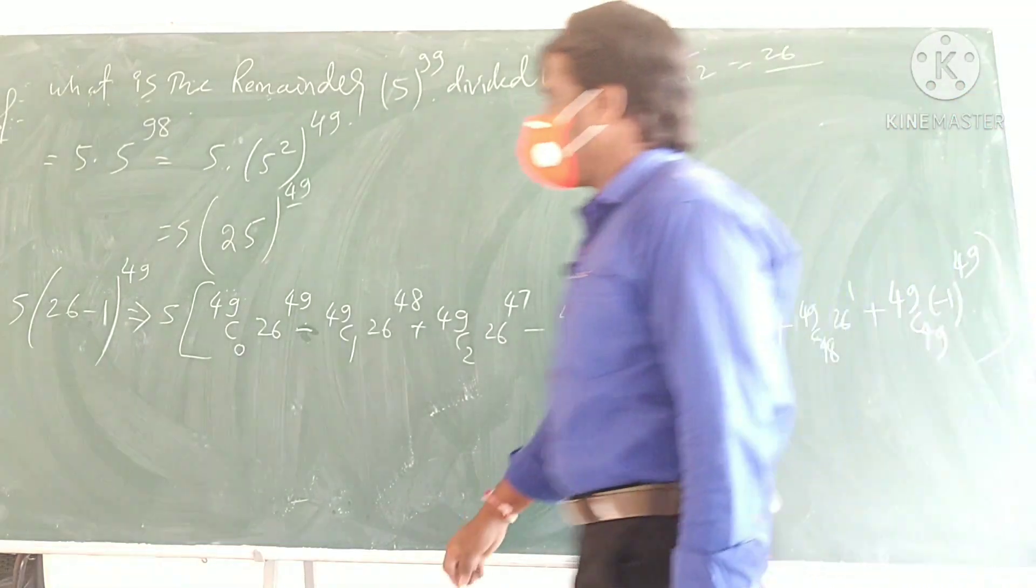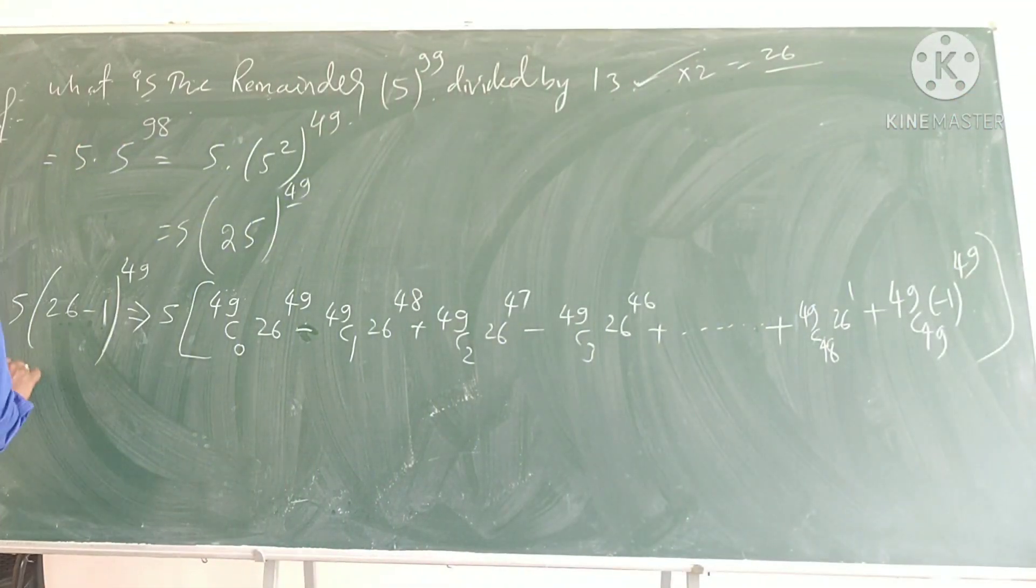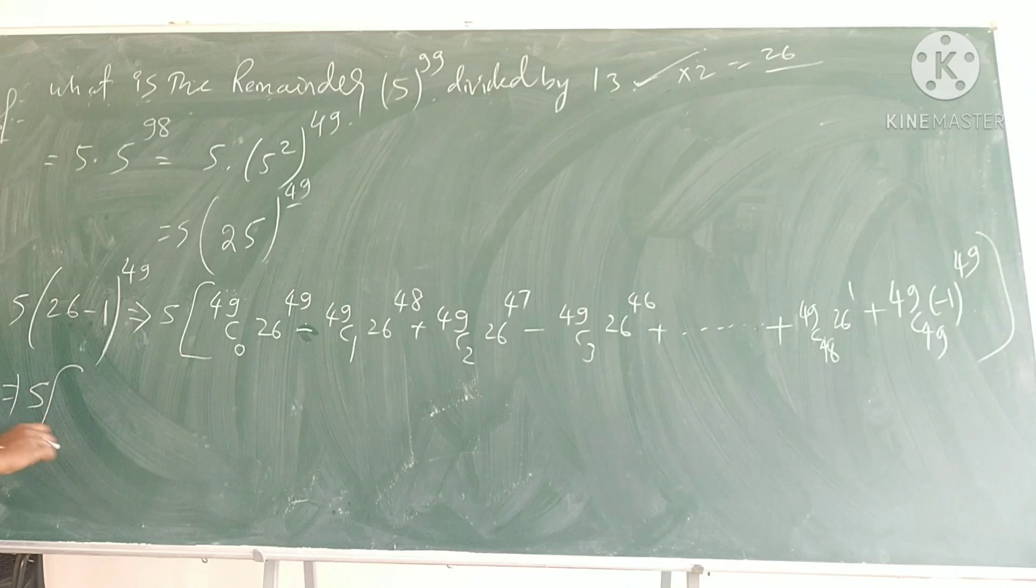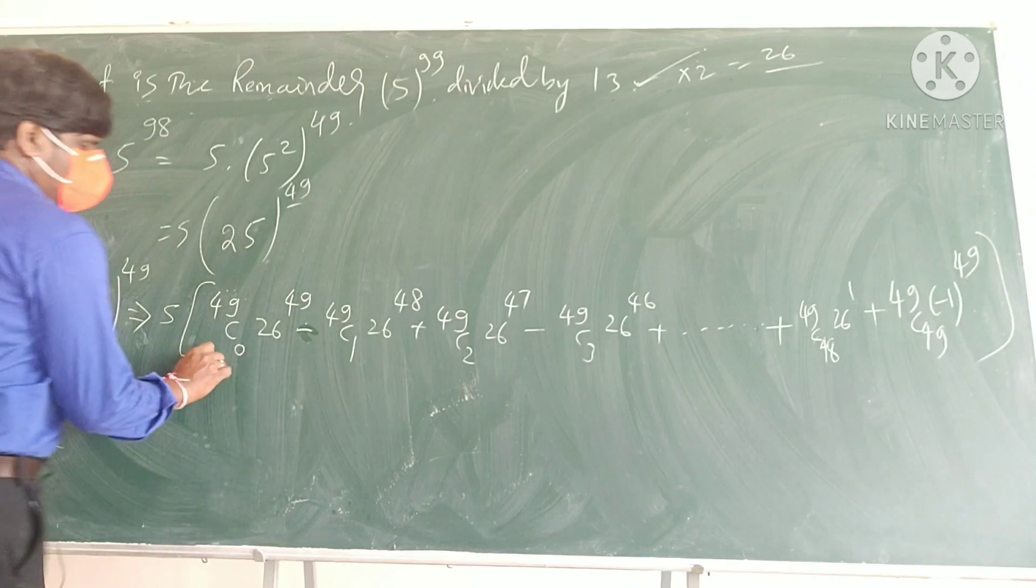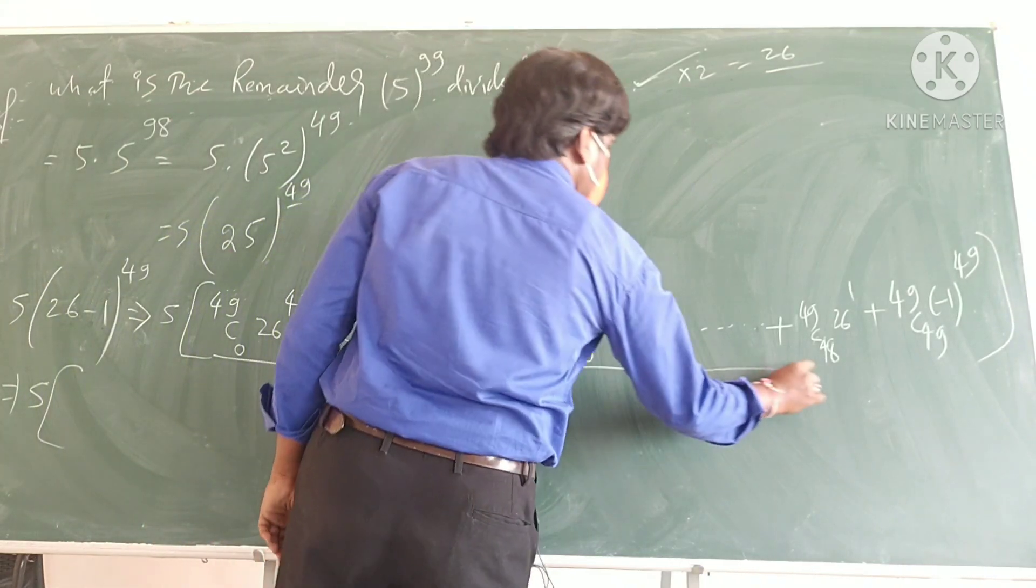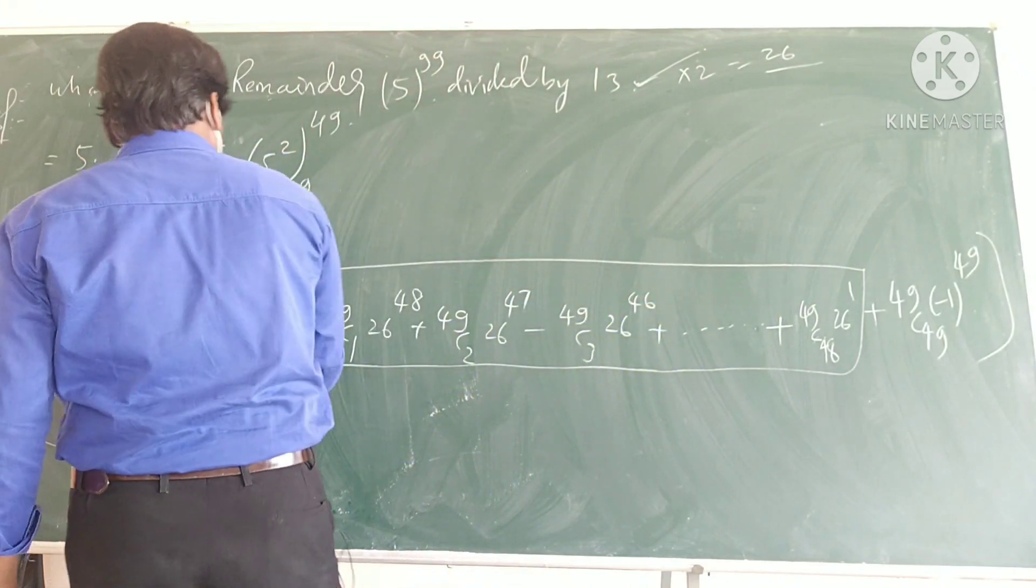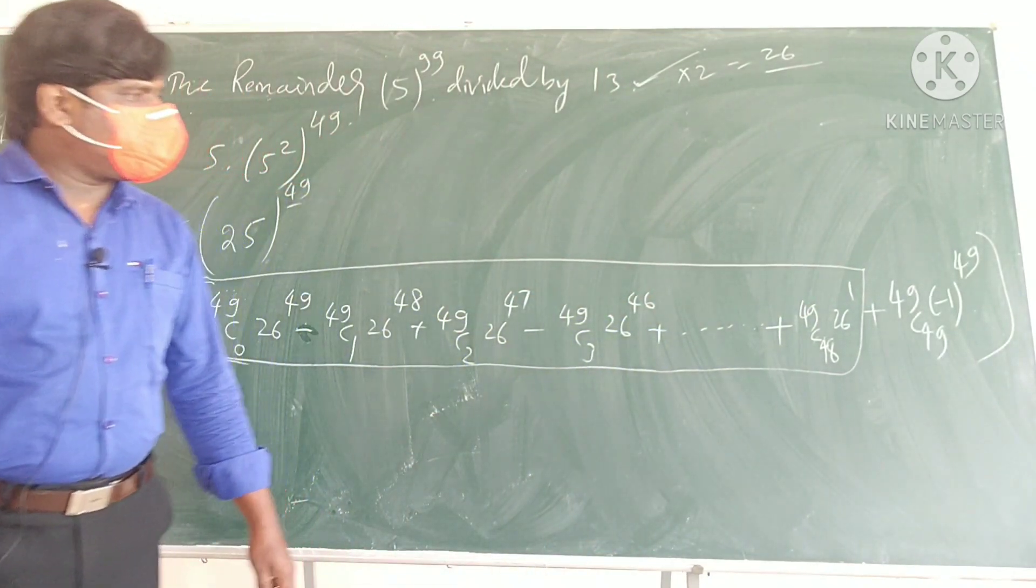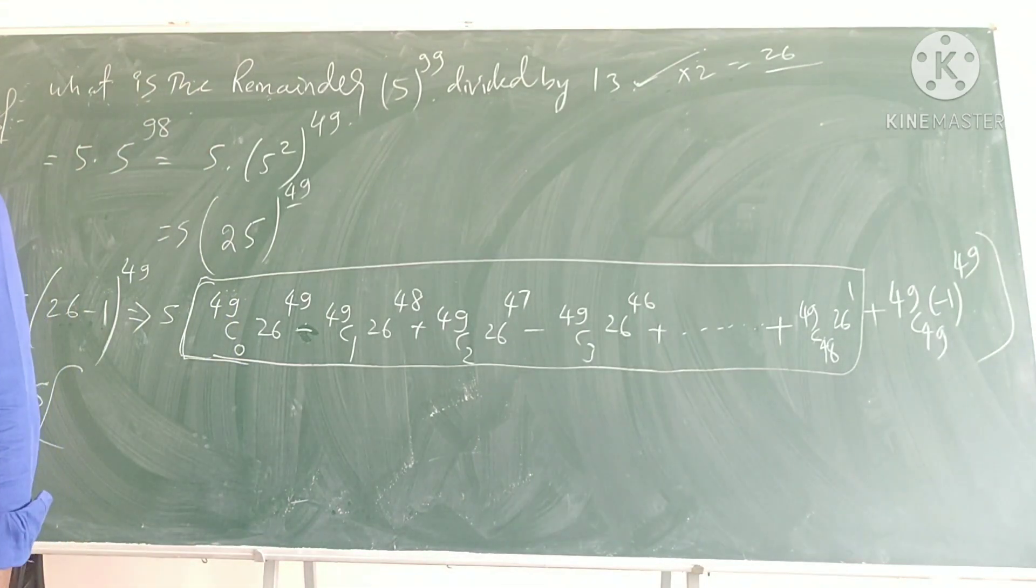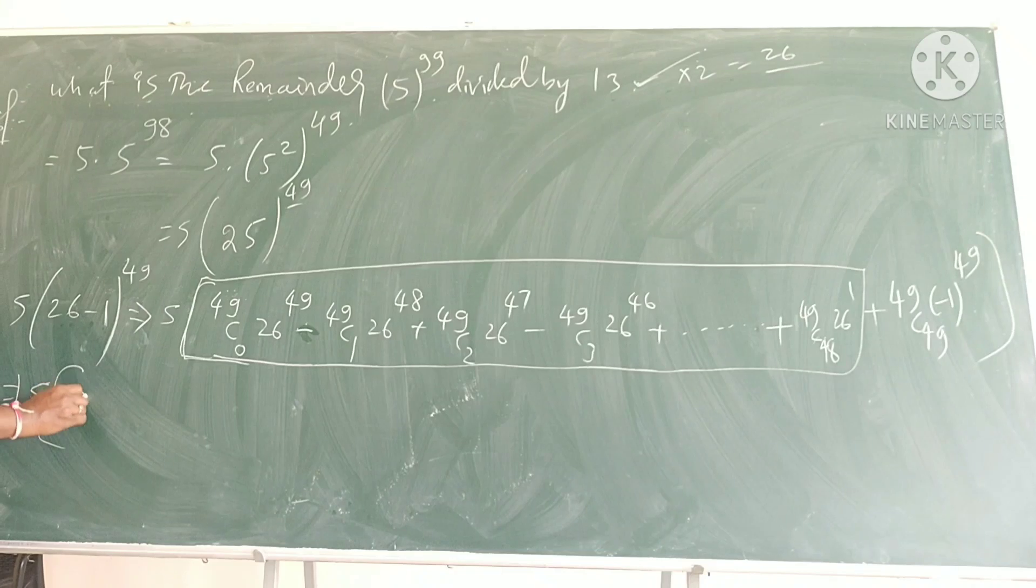So what I can write here, this is implies 5 into, I can write here, in this all, till here, in this. Can I take 13 common? Can I take 13 common?